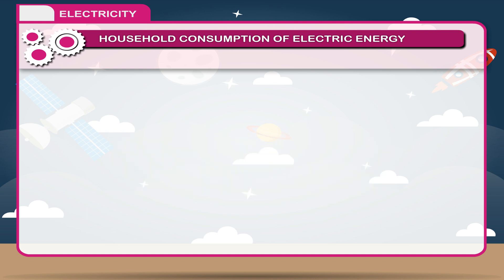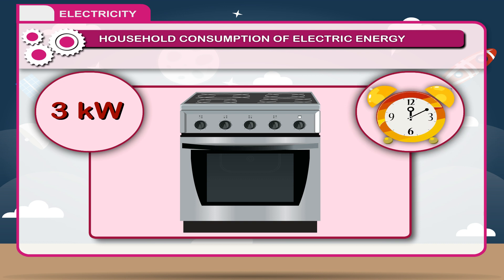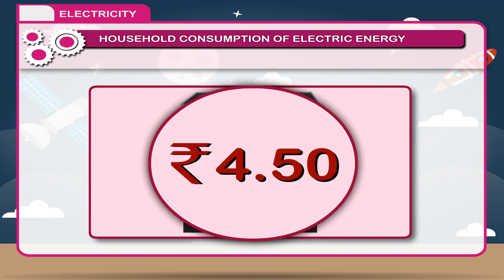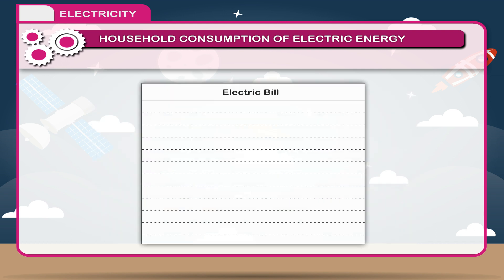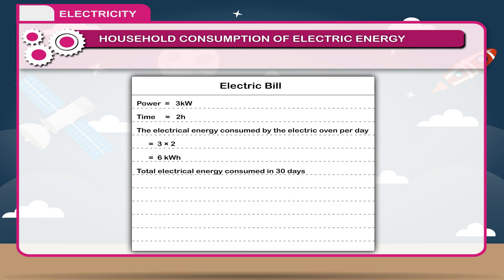Solved example: If an electric appliance of power 3 kW is used for 2 hours each day, calculate the electrical energy consumed for 30 days. Solution: Power = 3 kW, Time = 2 hours. Electrical energy consumed per day = 3 × 2 = 6 kWh. Total electrical energy consumed in 30 days = 6 × 30 = 180 kWh.